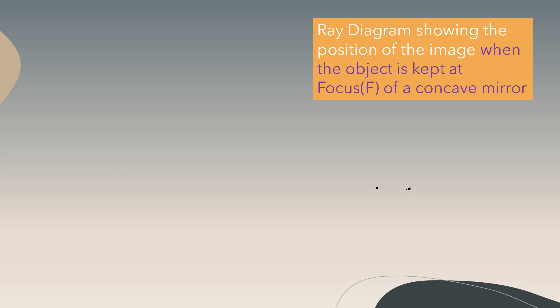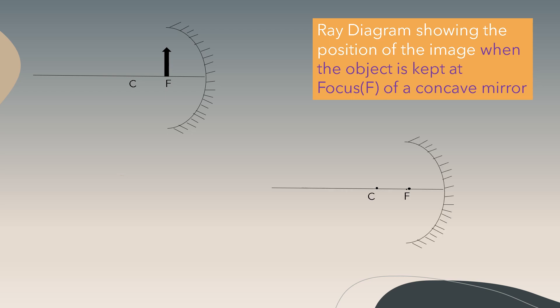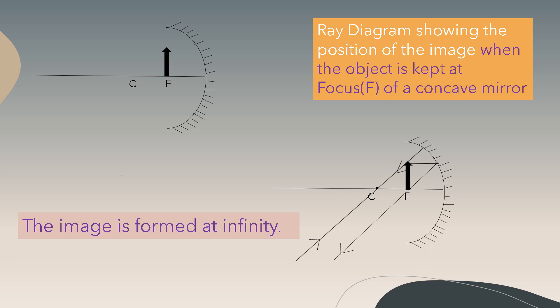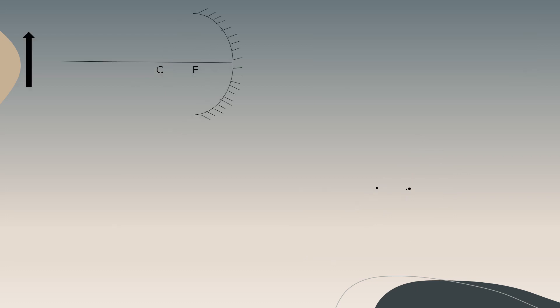Next, the ray diagram showing the position of the image when the object is kept at the focus. The ray parallel to the principal axis passes through the focus, and the next ray is drawn through the center of curvature touching the object. Since a ray passing through the center of curvature passes without any deviation, the image is formed at infinity.